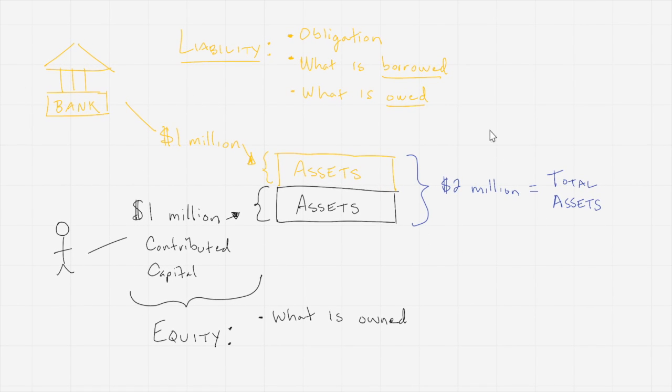So if we look at our total assets here, our two million dollars in total assets, we have one million dollars that's still owed back to the bank, that needs to get paid back. And then what's left over of the two million is this other one million that the owners are essentially entitled to.